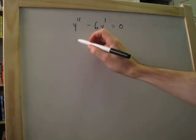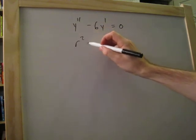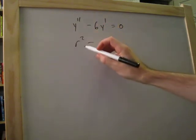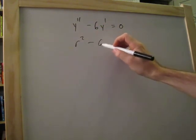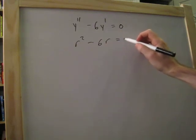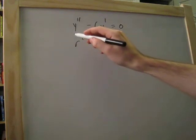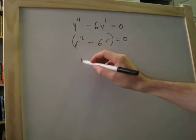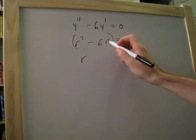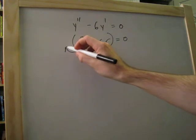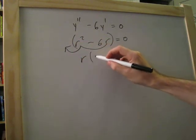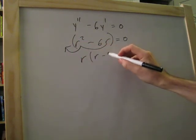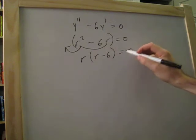So we'll bring this down to our characteristic equation. That gives us r squared minus 6r equals 0. Once we factor this, we're going to get r, so we factor these out here. That's r times r minus 6 equals 0.